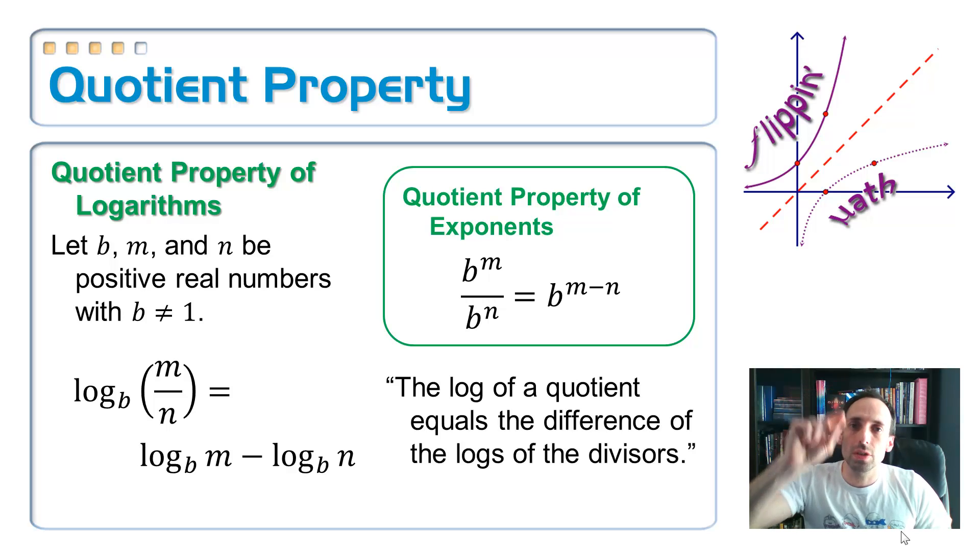Why is that true? It's because when logarithms are exponents, and whenever you are dividing with like bases, you're supposed to subtract the exponents. It's based on the quotient property of exponents. B to the M divided by B to the N is equal to B to the M minus N. Okay. So we're not going to prove that one. You may have to prove that one in your homework.